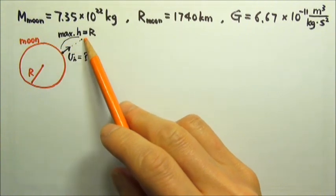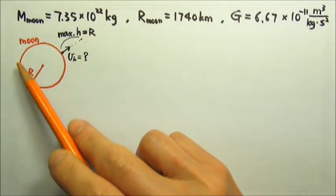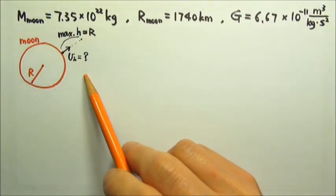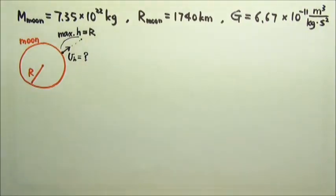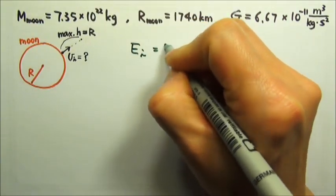It's a maximum height problem, so we can use conservation of energy. The moon does not have any atmosphere, so there is no air resistance. Therefore, E initial should equal E final.